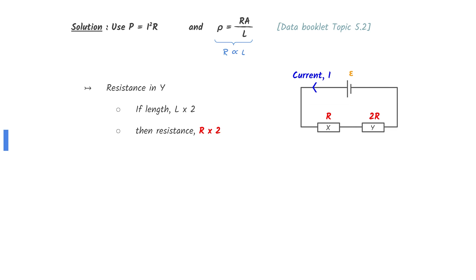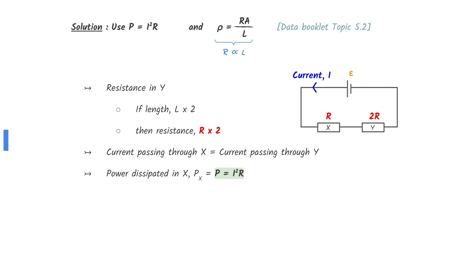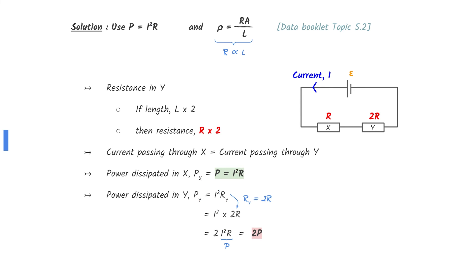Resistance is directly proportional to the length. Since Y has double the length of X, it has double the resistance of X. The currents passing through X and Y are equal since they are in series. The power dissipated in X is I squared R, which the question also tells us is P. Now to find the power dissipated in Y — the resistance of Y is 2R. Rearrange slightly and substitute in for P to find your answer.